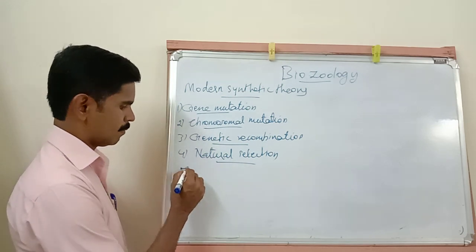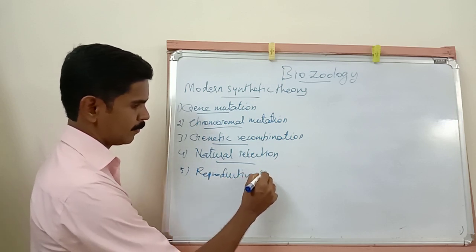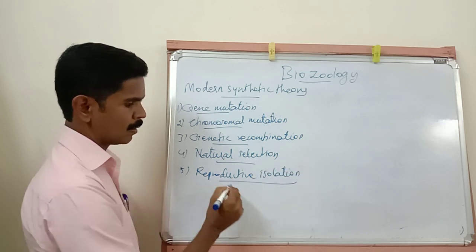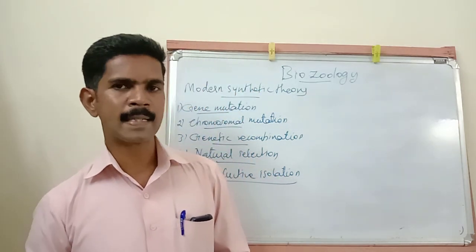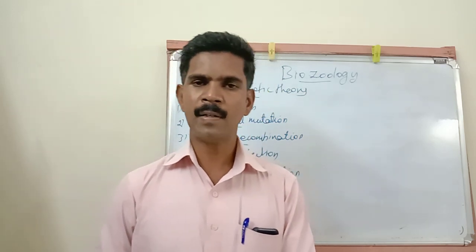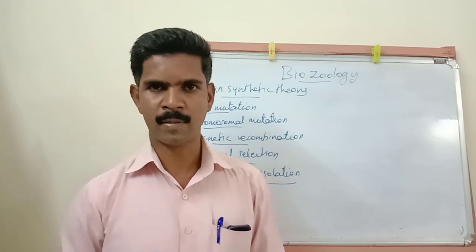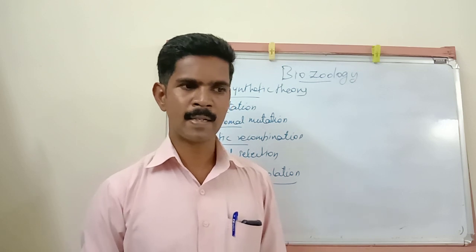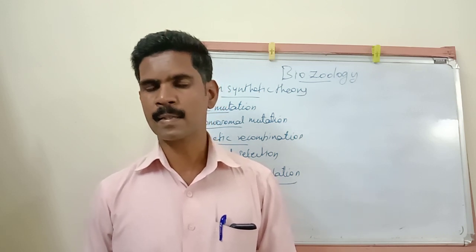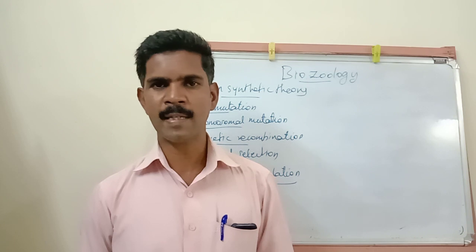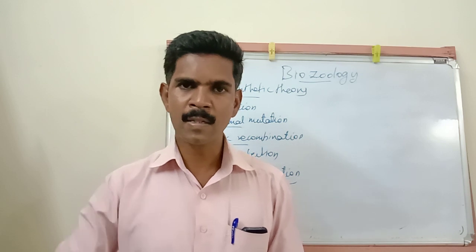The fifth and last factor is reproductive isolation. Reproductive isolation means that because of some reasons, the interbreeding between two closely related organisms is prevented or stopped. The reasons may include differences in the size of sex cells or differences in sexual characters and behaviors.